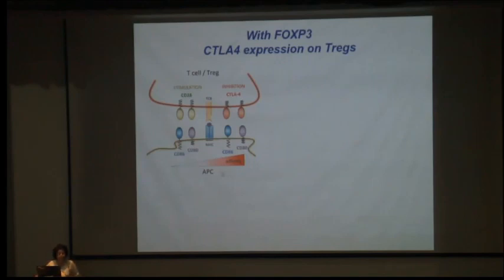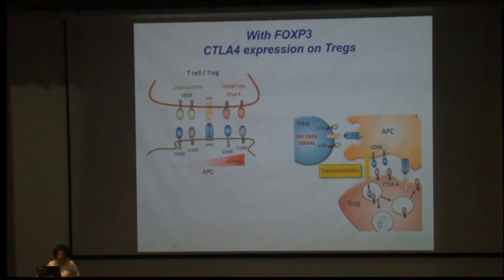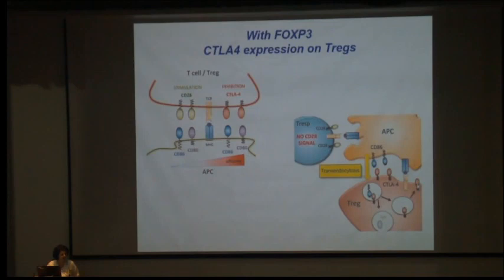When CTLA-4 affinity is high on APCs, T-regs are more potent. CTLA-4 has higher affinity for CD80 and CD86 than CD28 does. CTLA-4 goes to the APC and endocytoses CD80 and CD86 co-stimulatory molecules, which are then degraded; CTLA-4 returns to the surface. Without co-stimulatory molecules, there is no T cell immune activation. So CTLA-4 on T-regs is a key player that inhibits T cell activation.